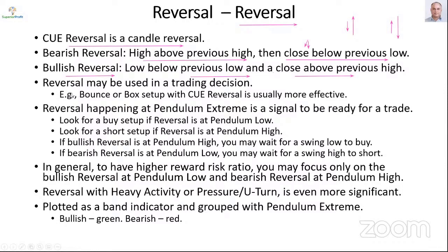Q Reversal may be used in a trading decision. Bounce or box setup with Q Reversal is even more effective. We don't need a Q Reversal for box or bounce setup, but if we have this pattern along with the checklist conditions, it is even more effective — because when it was trying to go down, it probably lured short traders or stopped out weak hands and immediately reversed, adding momentum in the up direction as short traders cover. The same is true in the opposite direction for bearish reversal.